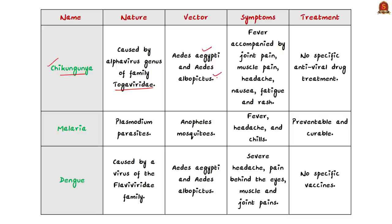These two vectors can also transmit other mosquito-borne diseases such as dengue. Chikungunya is characterized by an abrupt onset of fever, frequently accompanied by joint pains. Other common signs and symptoms include muscle pain, headache, nausea, fatigue, and rashes. There is no specific antiviral drug treatment for chikungunya and no commercial chikungunya vaccine; treatment is mainly directed at relieving the symptoms of chikungunya fever.